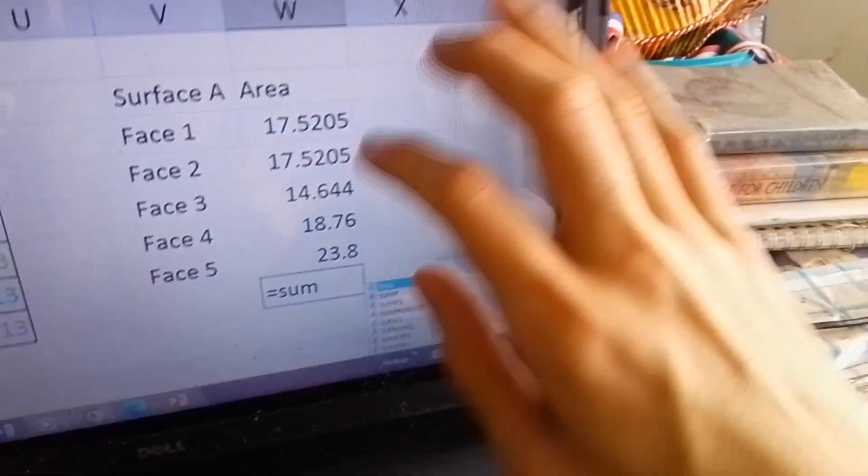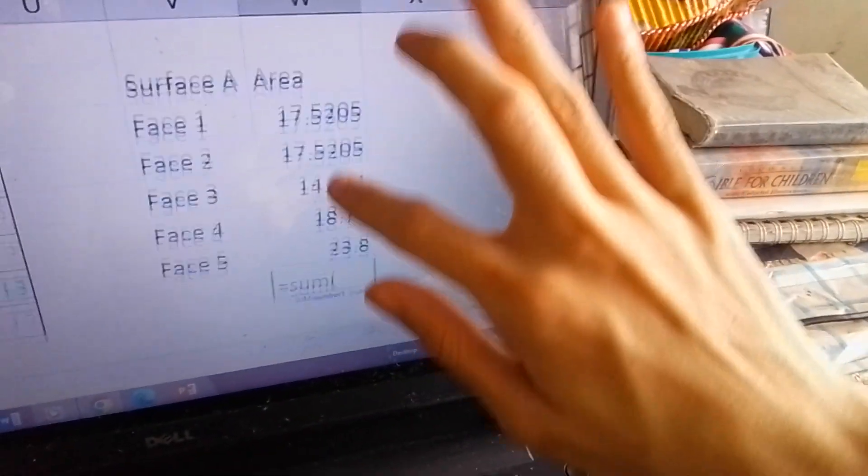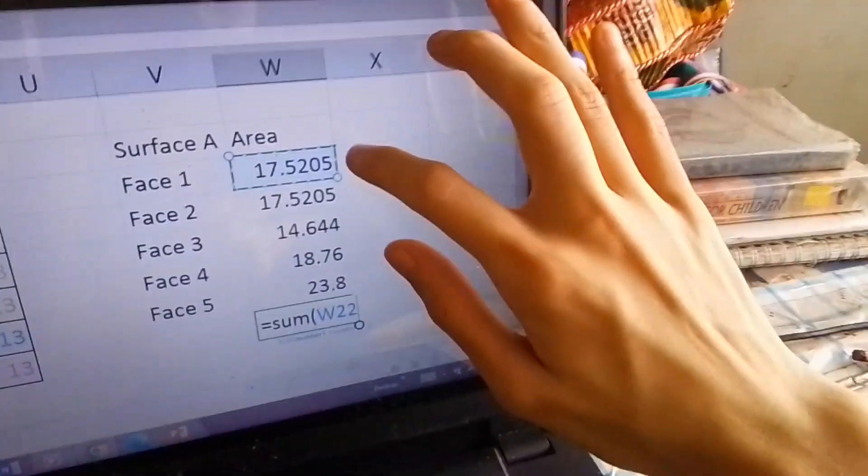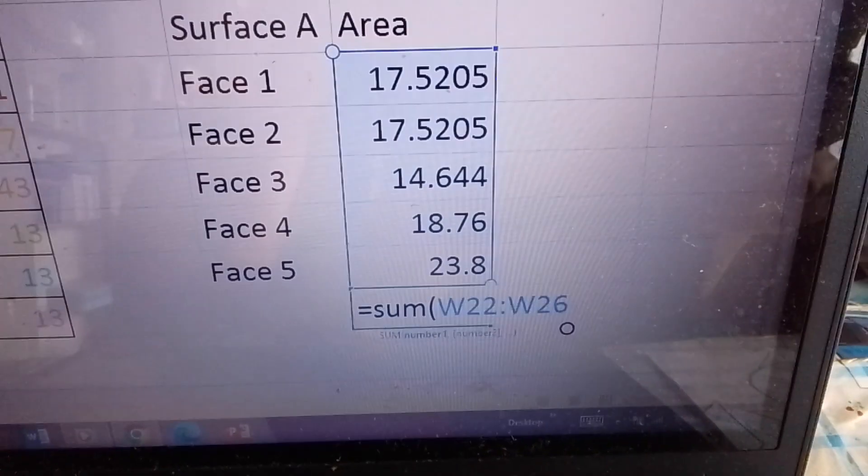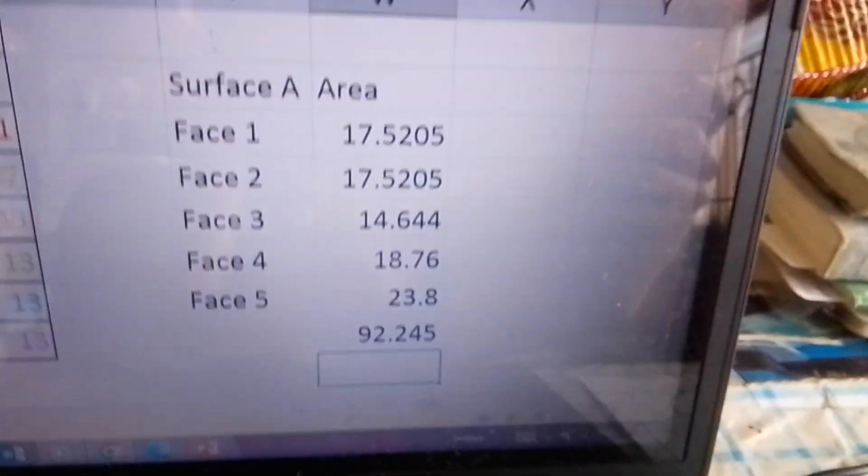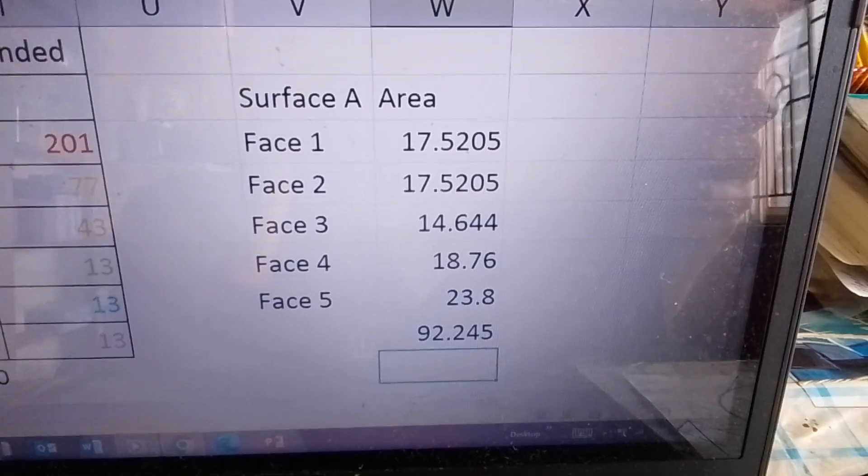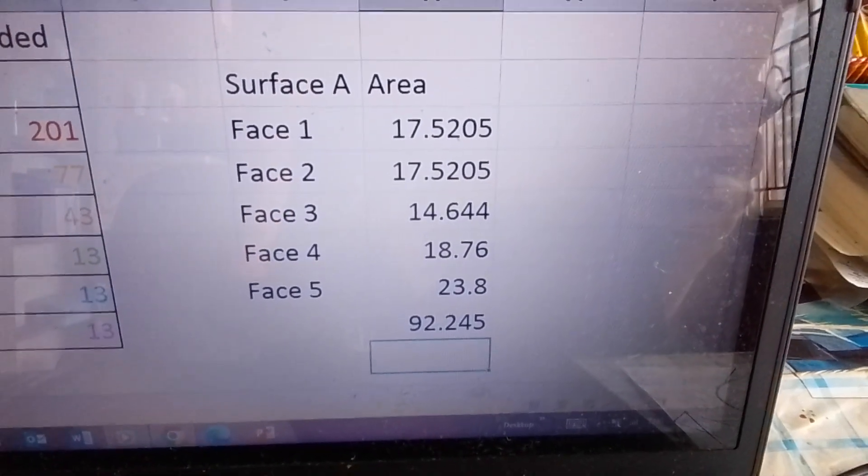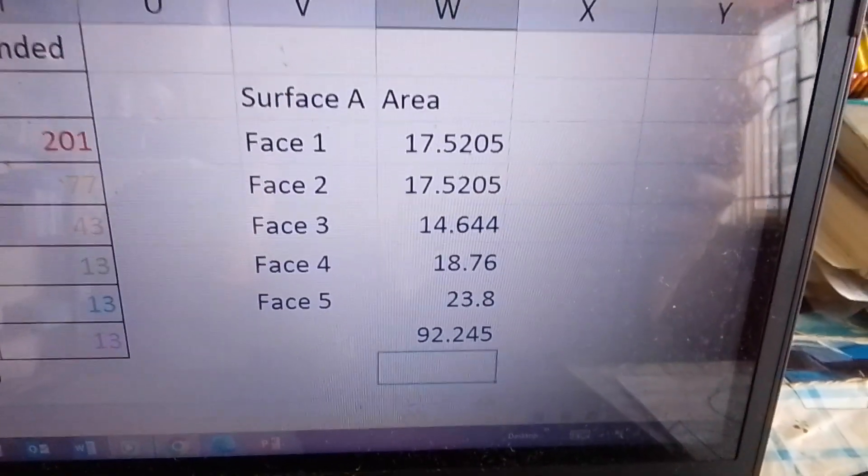Then because we're talking about surface area, we need to sum everything. So we sum this one, click on the cells, click this one, then drag down. You see it's highlighted there? That's what you need to sum all in all. What's the answer? The total surface area is 92.245 square centimeters. That is our surface area.